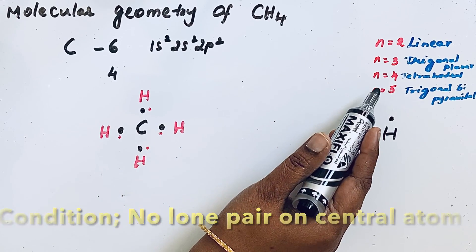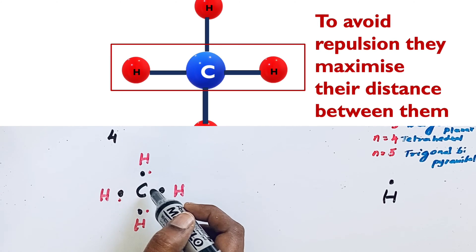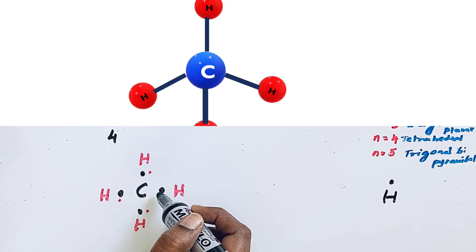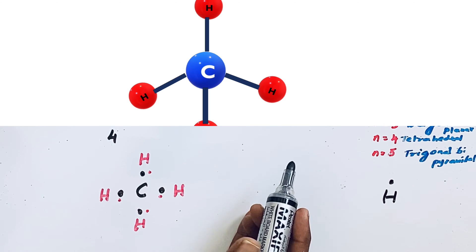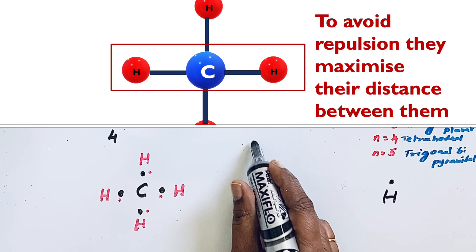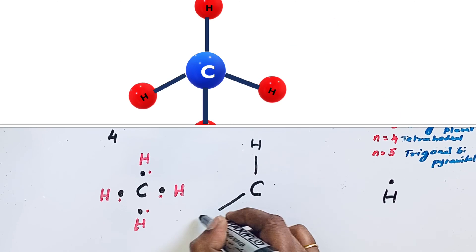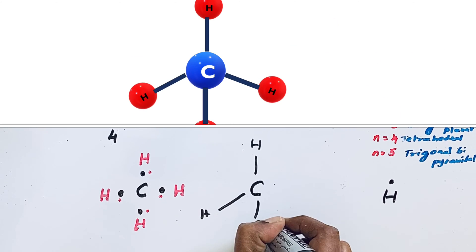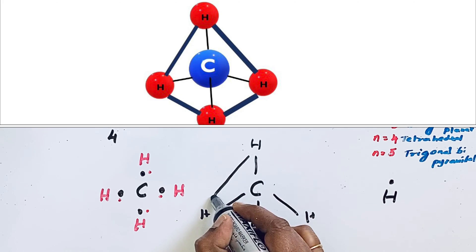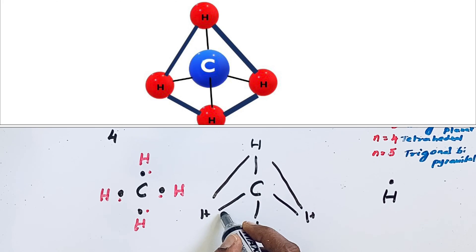It can form tetrahedral. Here bond pair-bond pair repel each other and try to maximize their distance between them and they get that tetrahedral. Let us show here carbon, hydrogen, and then here one hydrogen, hydrogen. This is the way they form tetrahedral geometry.